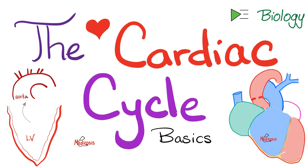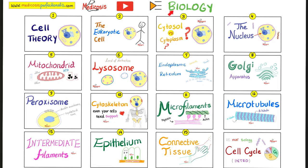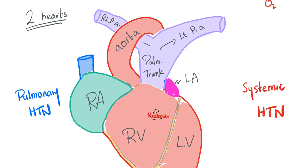If my heart rate is 100 beats per minute, how many cardiac cycles do I have per minute? 100. The heart has four chambers: right atrium, right ventricle, left atrium, left ventricle. From the left ventricle, blood goes to the aorta and into systemic circulation. From the right ventricle, it goes to the pulmonary artery and pulmonary circulation. If blood pressure in the systemic circulation goes up, it's called systemic hypertension. If blood pressure in the pulmonary circulation goes up, it's called pulmonary hypertension.